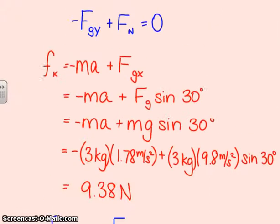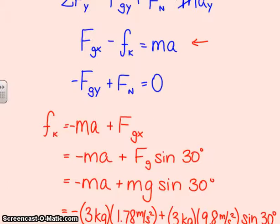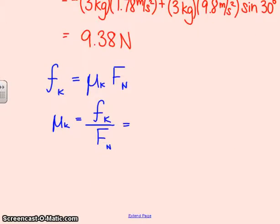Well, I know that the force of kinetic friction equals the coefficient of kinetic friction times the normal force, which means that the coefficient is equal to the force of friction divided by the normal force. Now, I don't have a number for normal force, but I can find a value for normal force based on this y direction equation. Specifically, I can tell that the magnitude of normal force is equal to the magnitude of the y component of f_g.